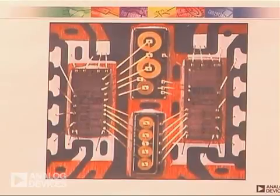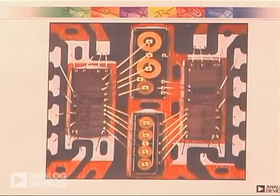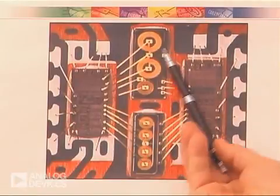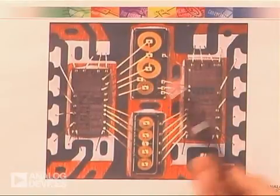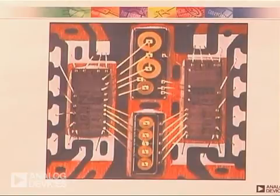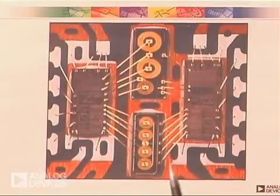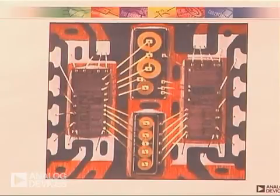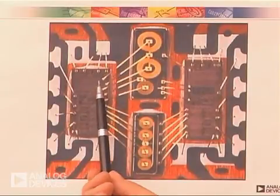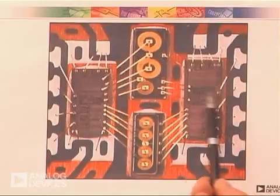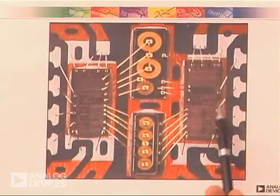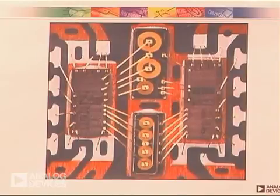Here we have a cutaway of our SO16 wide package containing the four die that make up a standard isopower iCoupler. You see here are the two large coils used for the power transformer. Below them is the feedback iCoupler channel which provides the PWM signal from the secondary to the primary. These other coils down here are actually the four channels for one of our quad iCoupler devices. The oscillator and the rectifier and control circuits are all built on a standard silicon die shown here and the entire structure is wire bonded together and packaged.